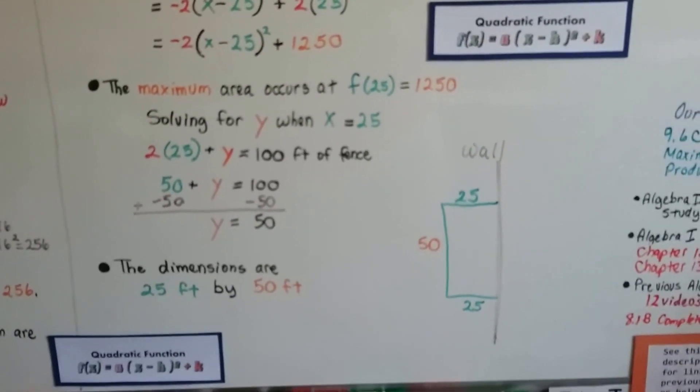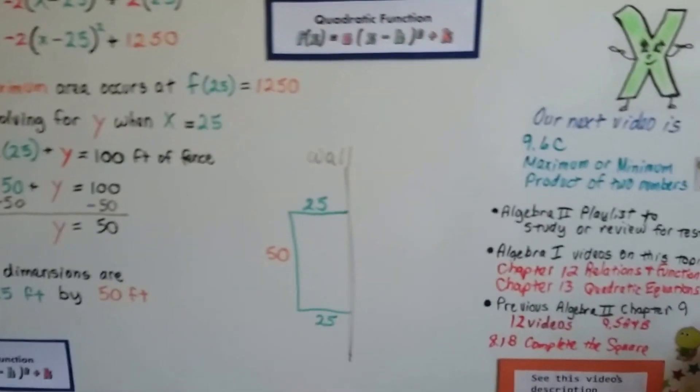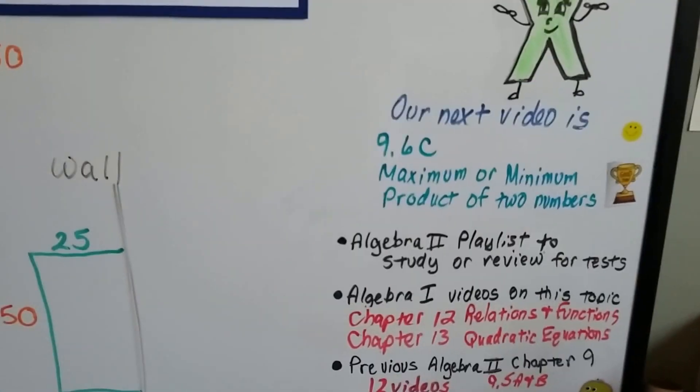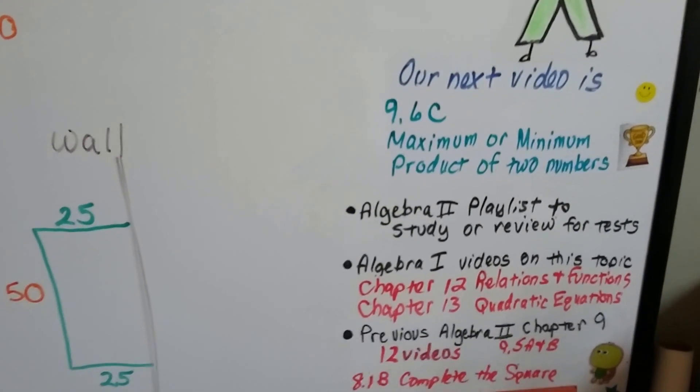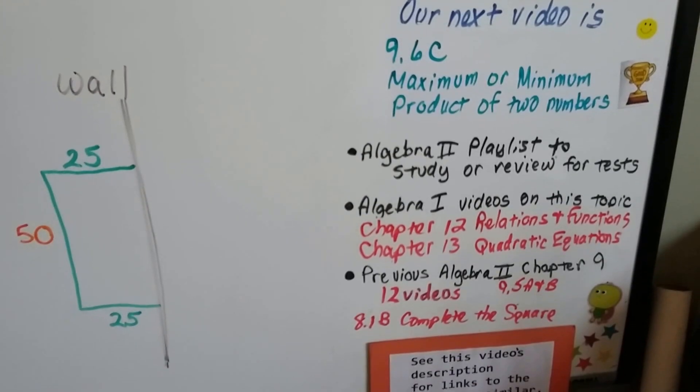If you're really confused, you have to go back and watch the last couple of videos, and there's going to be links in the description so you can watch them. We're going to do 9.6C and we're going to talk about the maximum or minimum product of two numbers that have a certain sum.